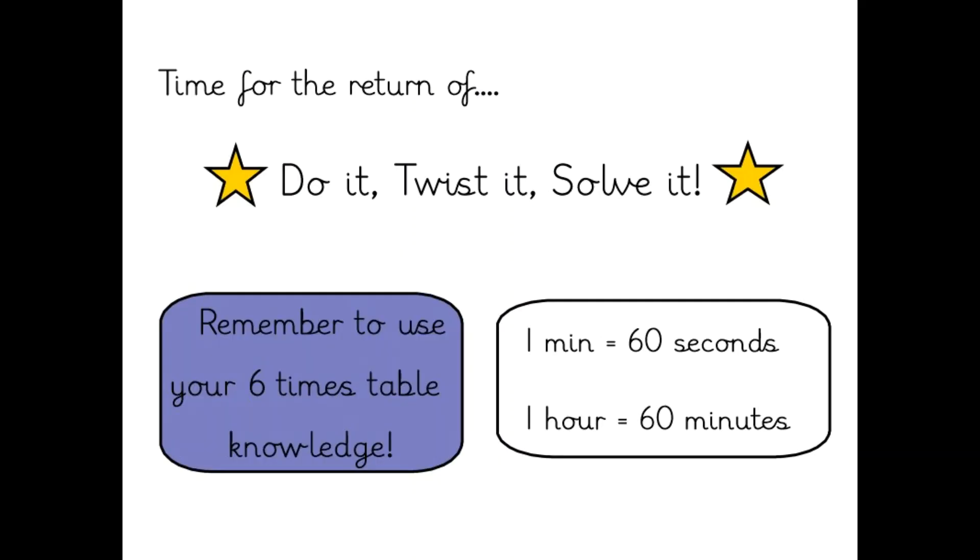Now you are ready to do your activity for today. And this week we have the return of the do it, twist it and solve it format. Remember to use your six times tables knowledge throughout your work today. You might find it handy to write out your six times tables next to your worksheet. And also remember that one minute is 60 seconds and one hour is 60 minutes. These will be very handy for you to remember today with your work.